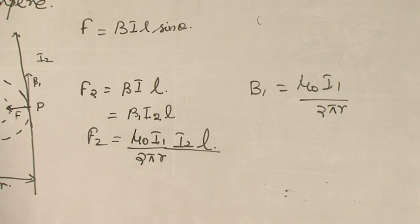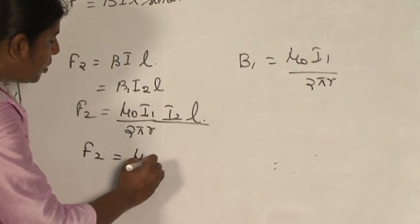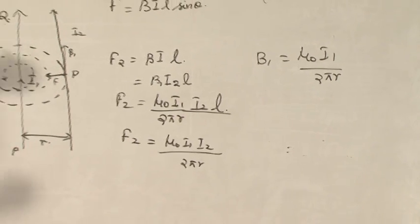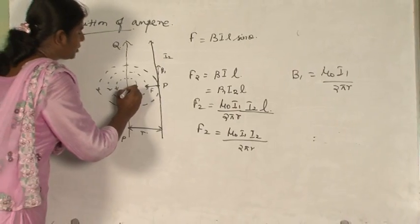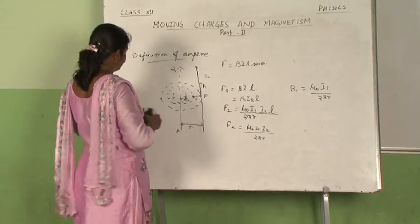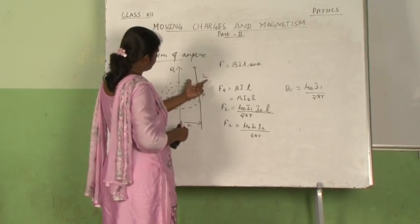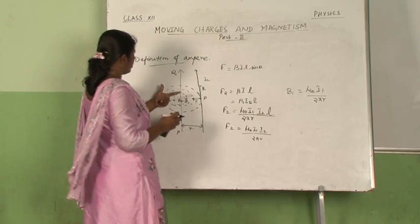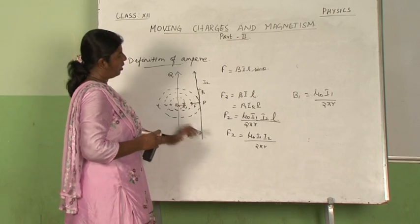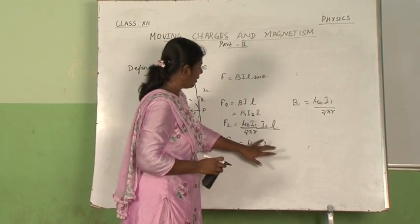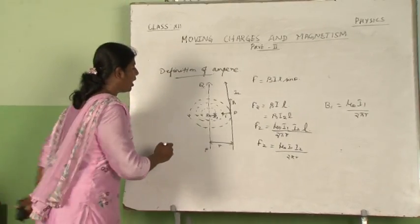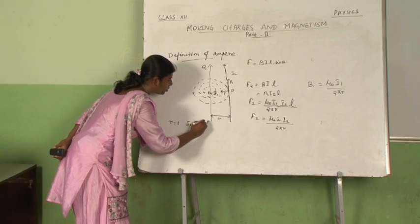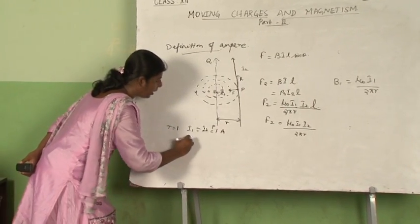If L is equal to 1, that is for unit length, you will get F₂ is equal to μ₀·I₁·I₂ divided by 2πR. Applying Fleming's left hand rule, you find the force direction. Here I₂ is the current flowing in the second conductor, and at point P you get force F₁ on the other side. For F₂ equal to μ₀·I₁·I₂ divided by 2πR. If R is equal to 1, I₁ is equal to I₂ is equal to 1 ampere, then F₂ is equal to μ₀.